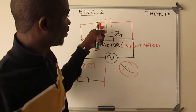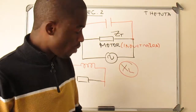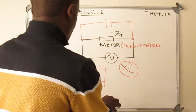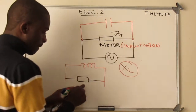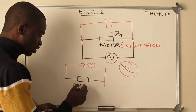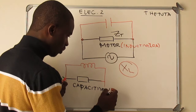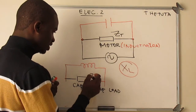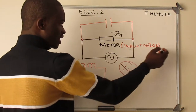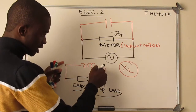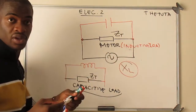You connect a specific component in parallel with the given load to do power factor correction. There are two cases: for an inductive load, you connect a capacitor in parallel; for a capacitive load — meaning the capacitor is the dominant component — you connect an inductor in parallel. After finding the total impedance for any given circuit, you determine whether it is capacitive or inductive, then connect the appropriate component in parallel.